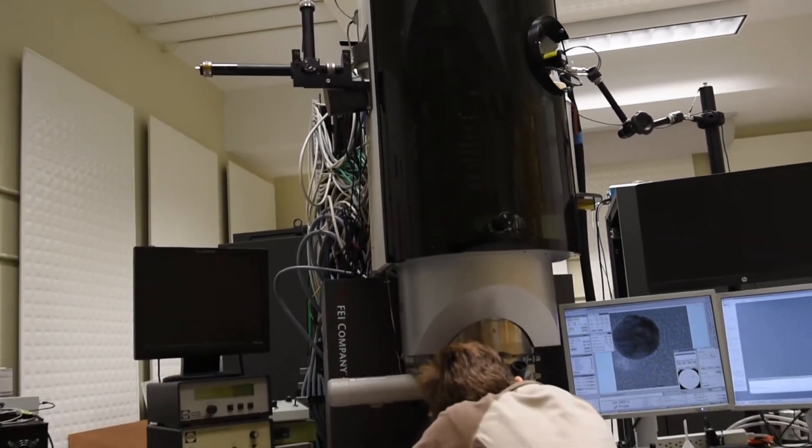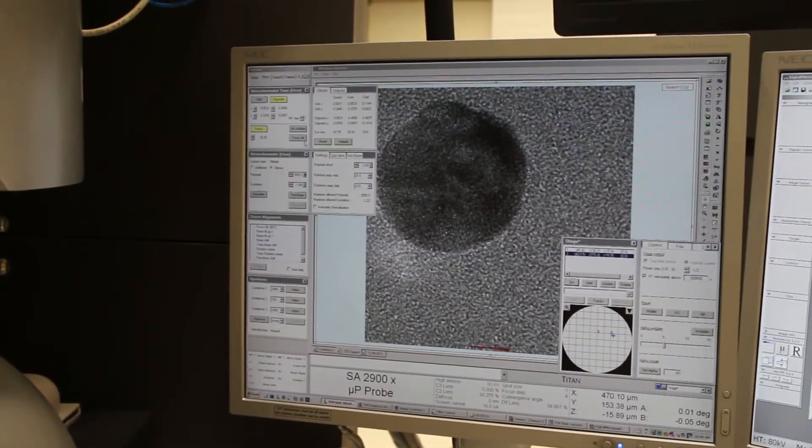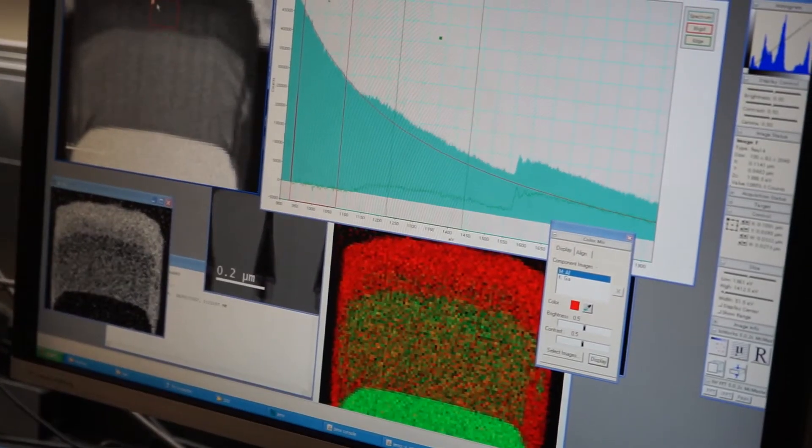This is a Titan transmission electron microscope. It's used to characterize materials at high resolution, both from looking at the microstructure as well as some of the precipitates and local chemistry.